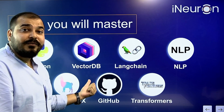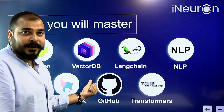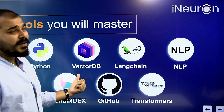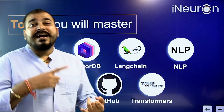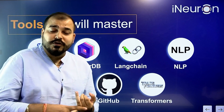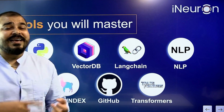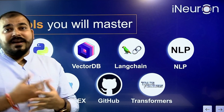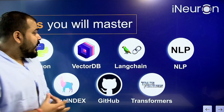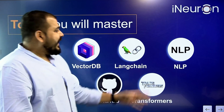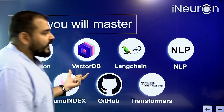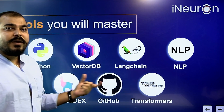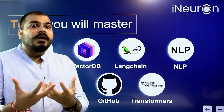That is where Vector DB becomes important. We'll understand various open source databases like Cassandra DB, MongoDB, and many more. After completing NLP and vector databases, we are also going to learn about frameworks.